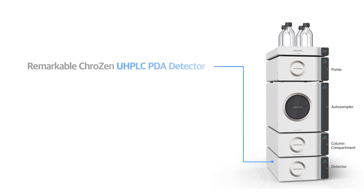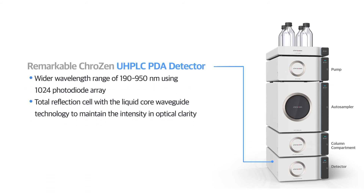Remarkable Crozen UHPLC photodiode array detector. It has a wide wavelength range from 190 to 950 nanometers using a 1024 photodiode array, and applies the same total reflection cell technology as the Crozen UHPLC UV detector.